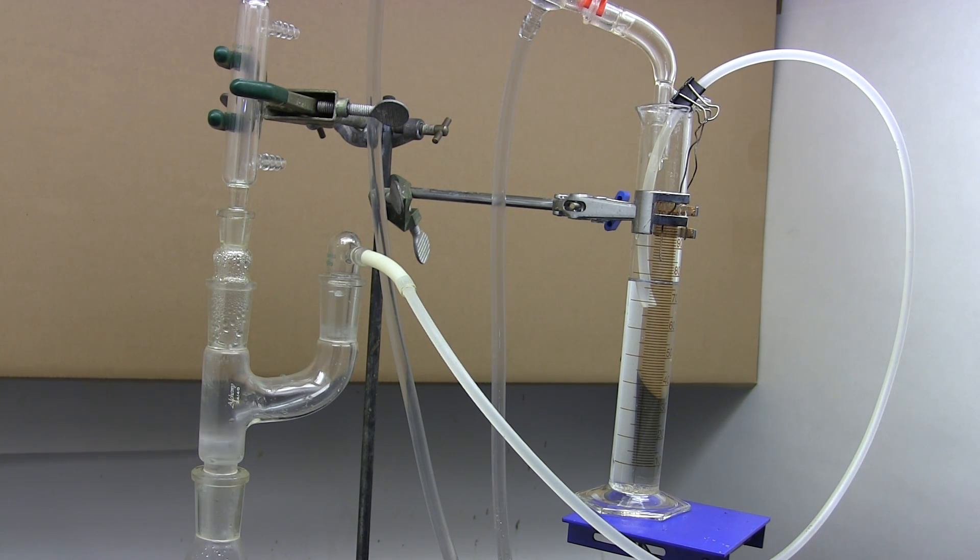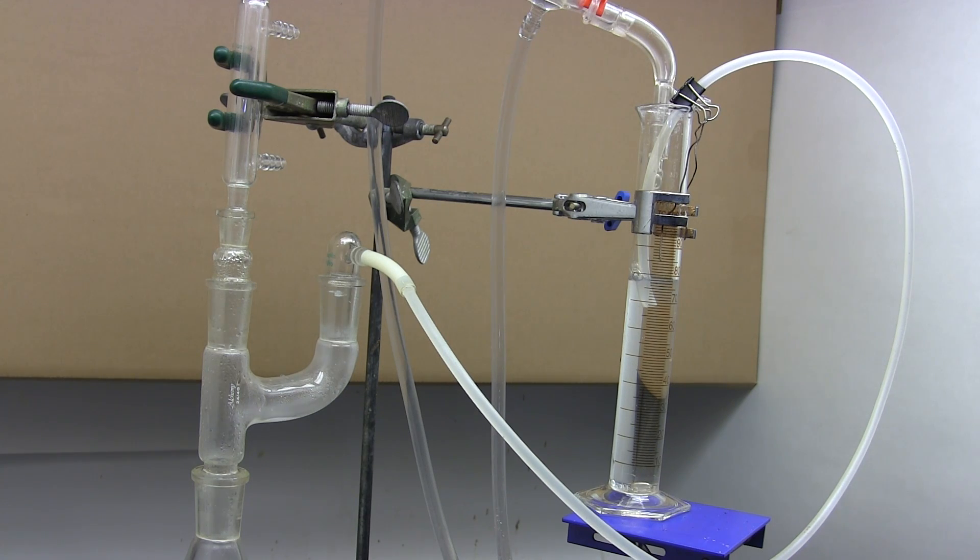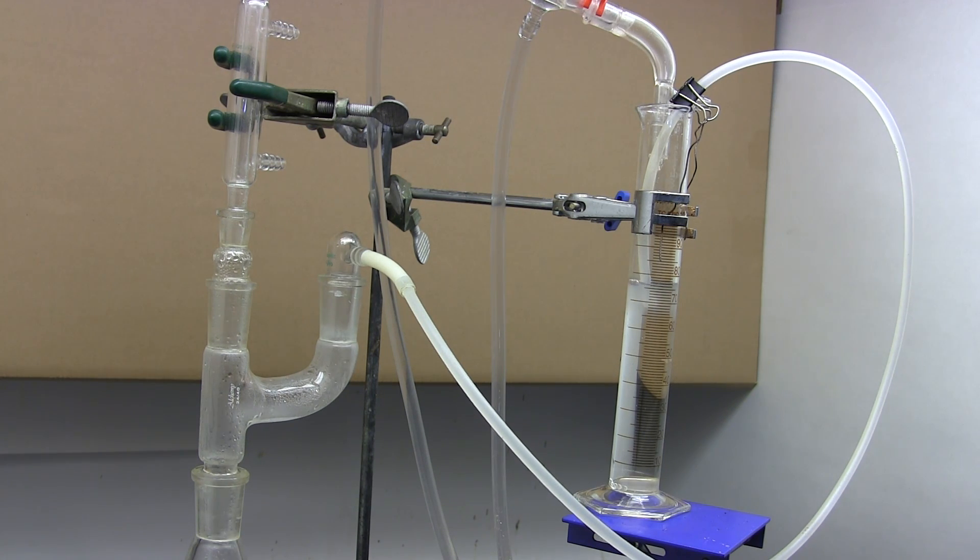And there it goes. First the vapor rises up through the columns and into the condenser. It condenses back into a liquid that phase separates and drips into the graduated cylinder. The heavier water phase sinks to the bottom where it collects. The lighter phase overfills the cylinder and the siphon tube sucks it out and returns it to the boiling flask via the Claisen adapter.